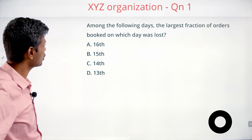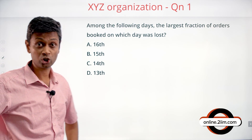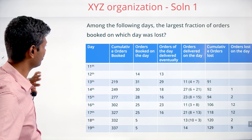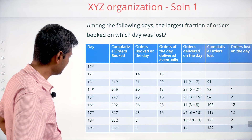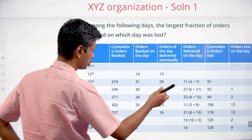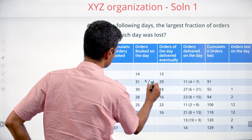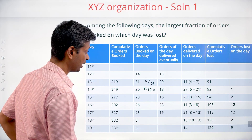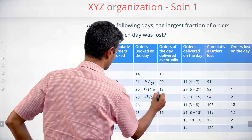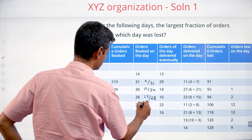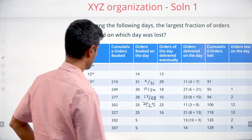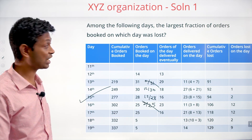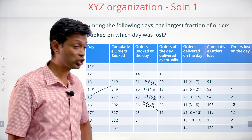Question: Among the following days, on which day was the largest fraction of orders booked lost? For 13th: 2 lost out of 31 — fraction is 2/31. For 14th: 12 lost out of 30 — fraction is 12/30. For 15th: 12 lost out of 28 — fraction is 12/28. For 16th: 2 lost out of 25 — fraction is 2/25. The 13th and 16th fractions are very small. Comparing 12/30 and 12/28 — 12/28 is larger. The largest fraction of orders lost was on 15th: 12 out of 28.